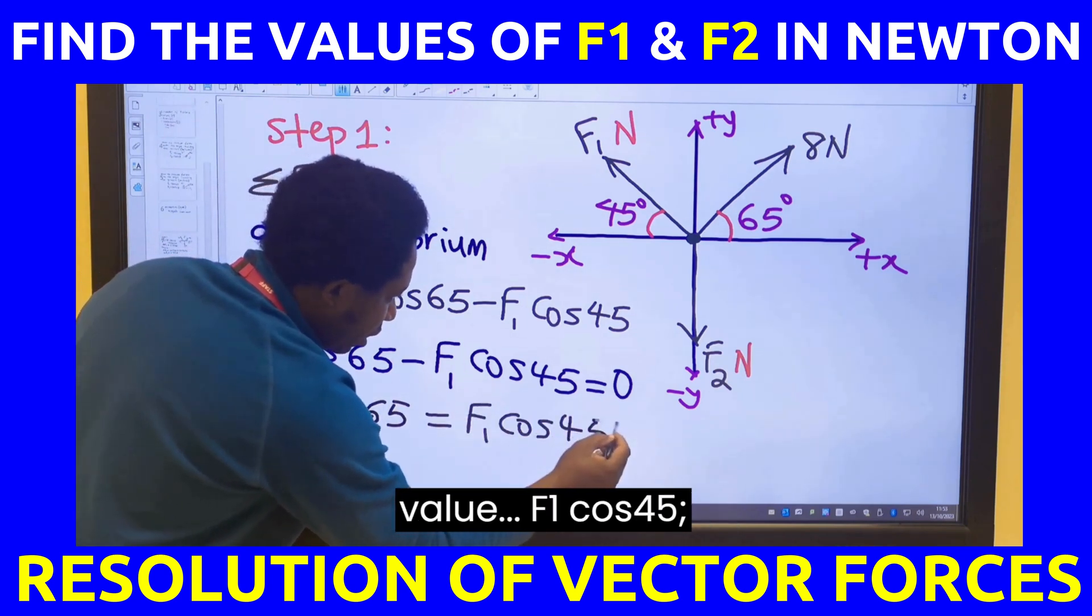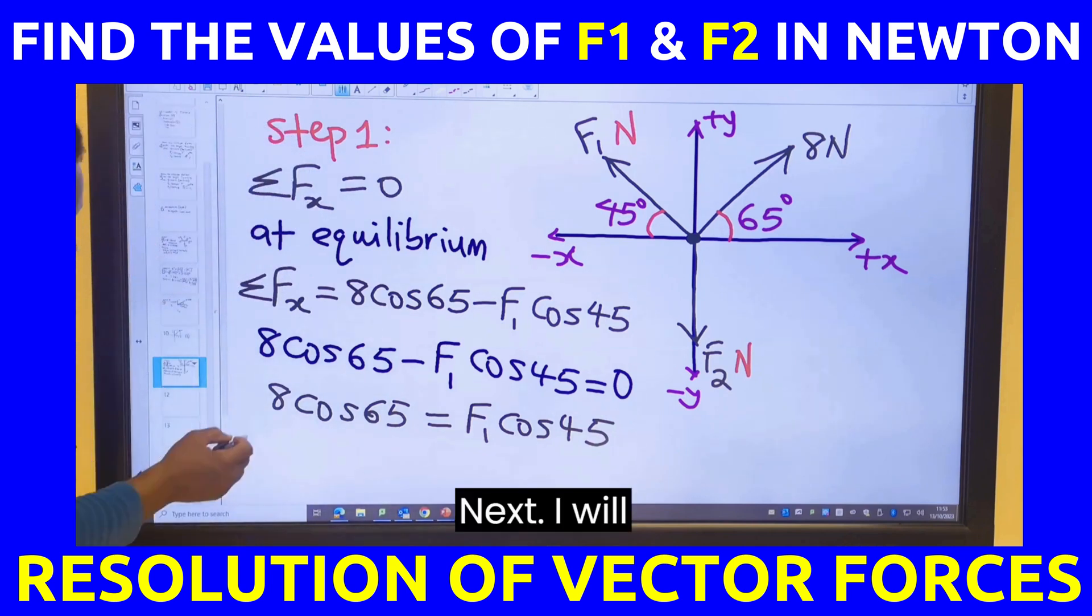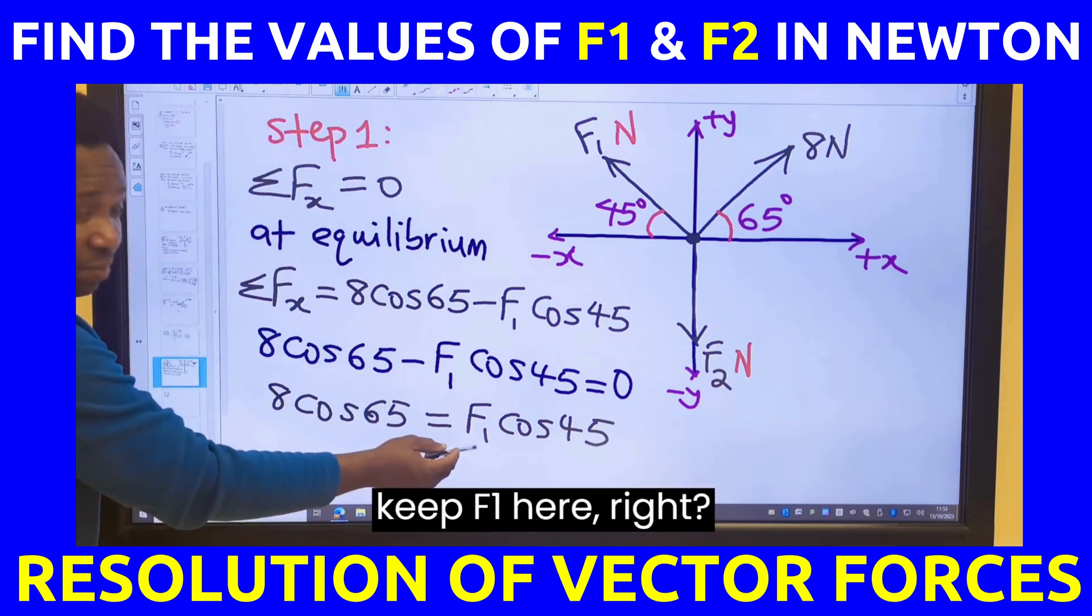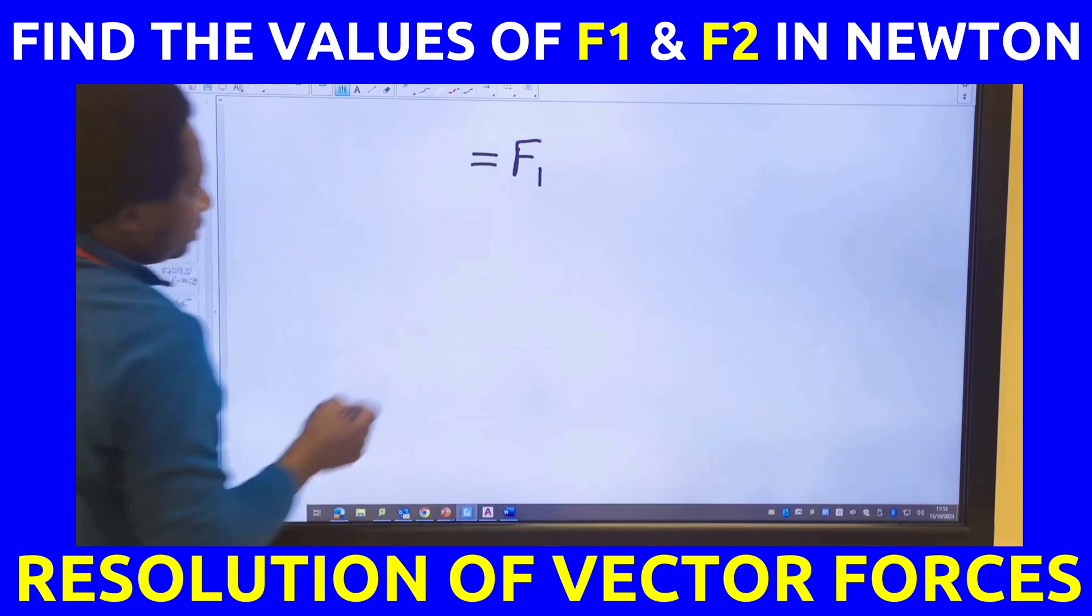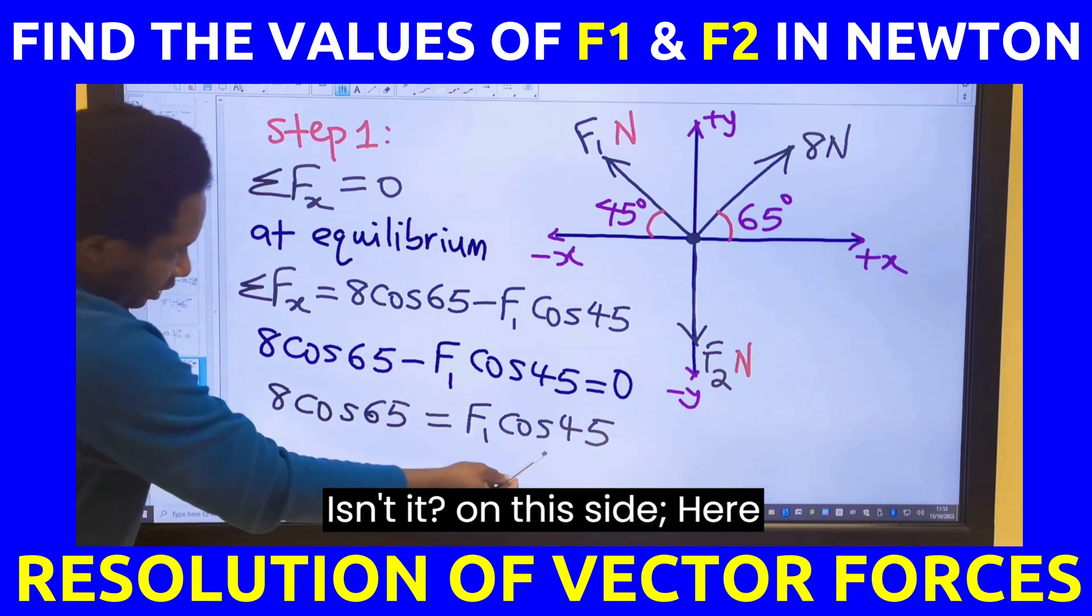F1 cos 45. Next, I will keep F1 here. F1 will remain here on this side.